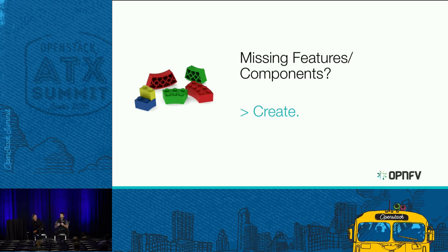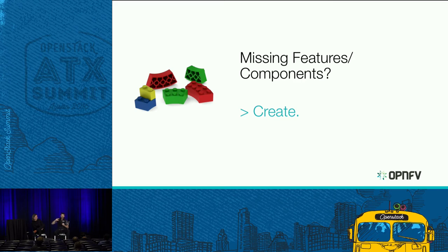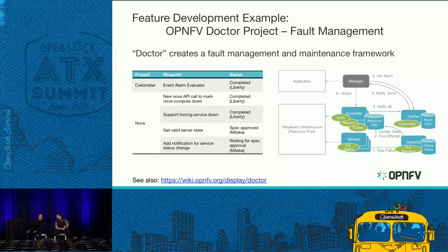We have good examples of projects that have come to OPNFV, described from an NFV perspective the capabilities and behaviors they want in order to support interactions with management and orchestration suites or different networking components, and then gone upstream to articulate what they need in the different components to achieve those use cases. One great example is what the Doctor people have done.